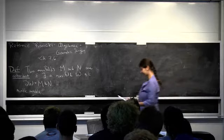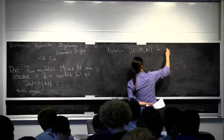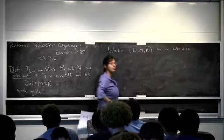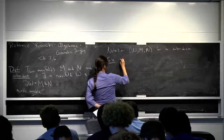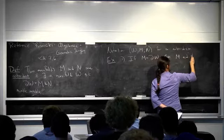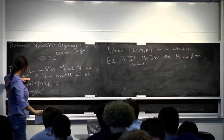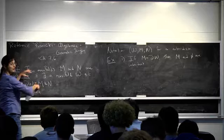As a notation, we'll write (W; M, N) for a cobordism. First important example: if M is just the boundary of something, then M and the empty set are cobordant. By the way, why is it called cobordism and cobordant? 'Bord' is the French word for boundary, and so together they are the boundary — cobordant. The 'co' means together; it is not the same kind of 'co' you're usually dealing with.